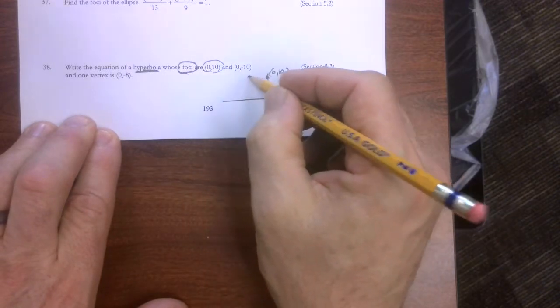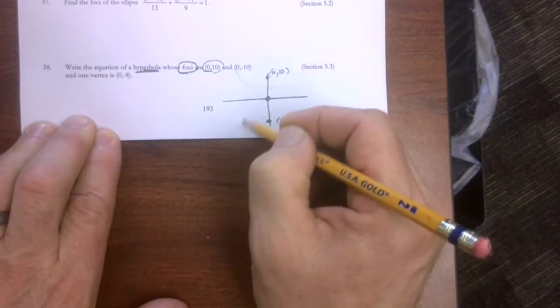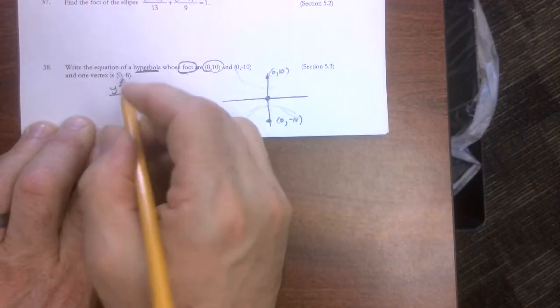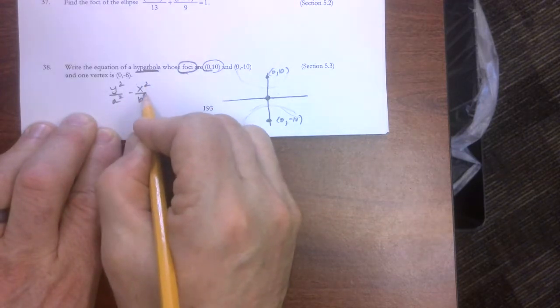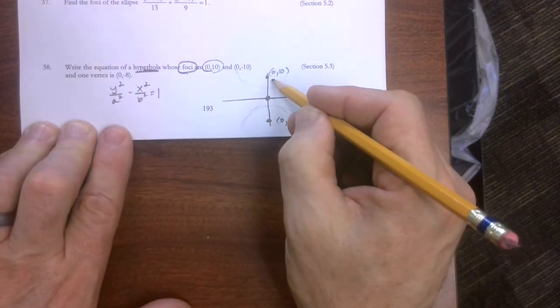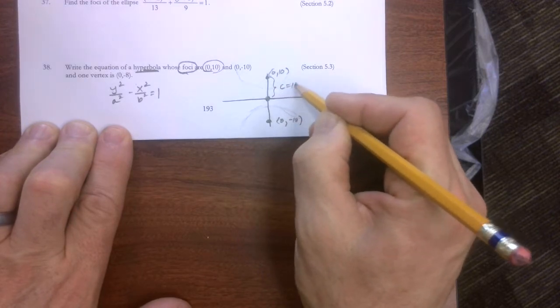Because it's going to be going this way, generically speaking, we know that it's going to be y squared over a squared minus x squared over b squared equals 1. So now we need to go on the hunt.